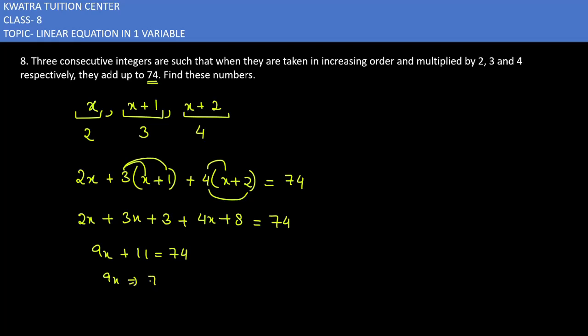Move 11 to the other side: 74 minus 11 equals 63. So x equals 63 divided by 9, which equals 7.